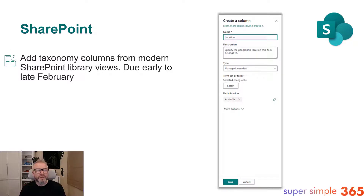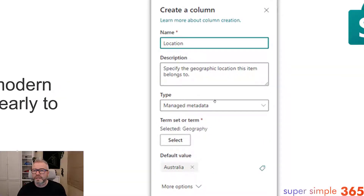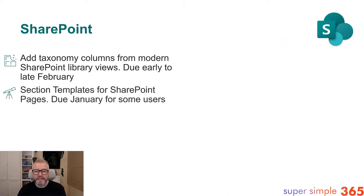Next up is just a bite-sized update — the ability to add taxonomy columns from the modern SharePoint library view. You can see here that a new column is being created with the type set to managed metadata, and you can set it up from there. Look out for that in February.